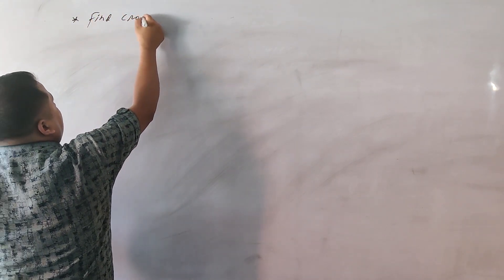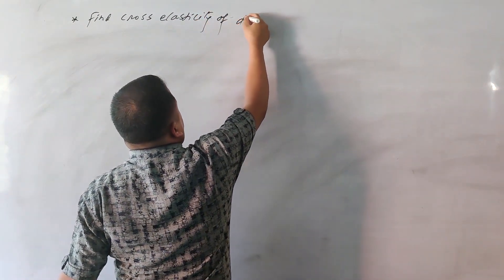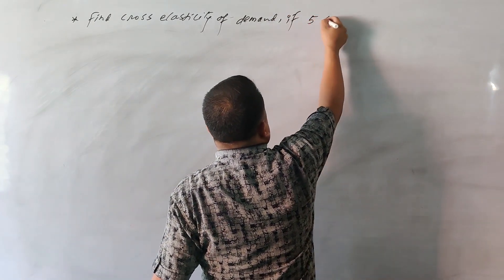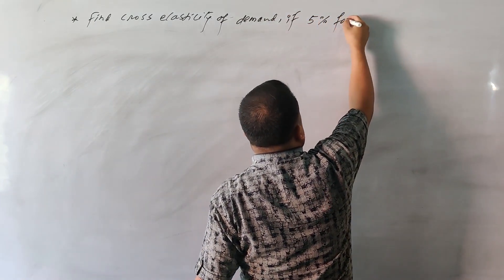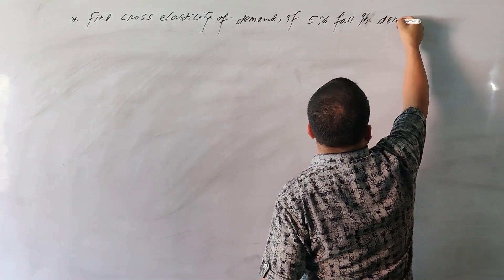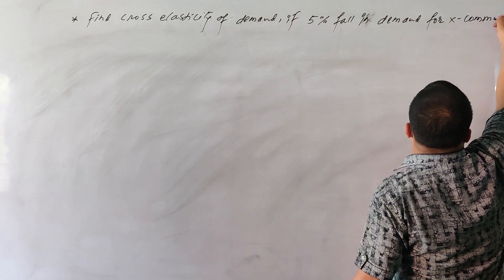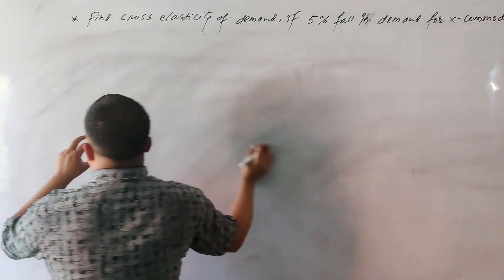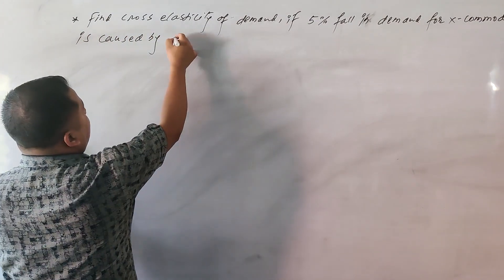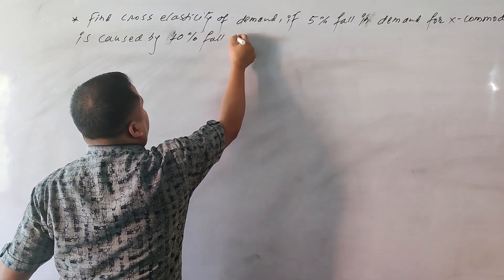Now let's find cross elasticity of demand. If a 5% fall in the price of Y commodity causes a 10% fall in demand for X commodity, then what is the value of cross elasticity of demand?